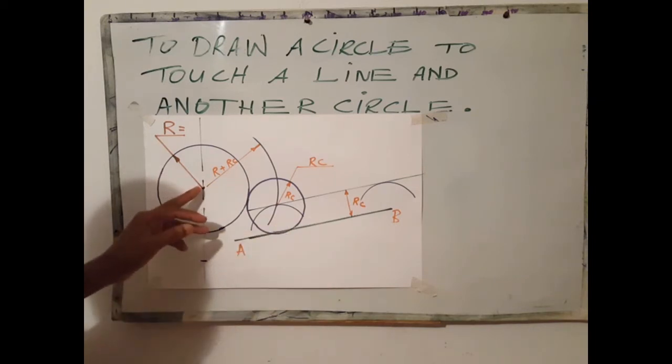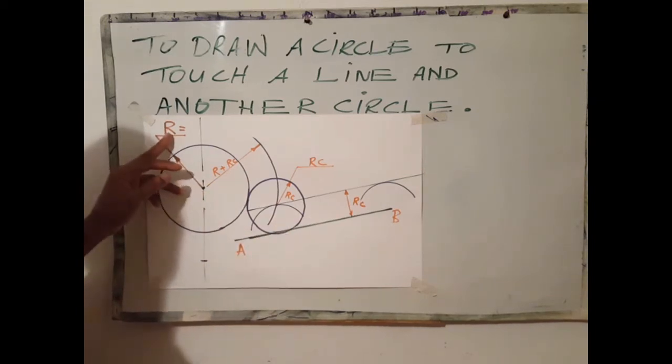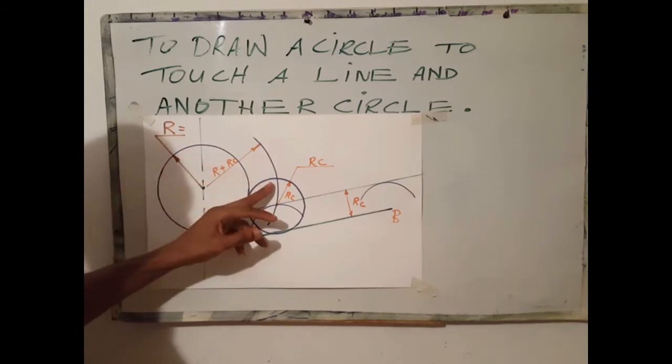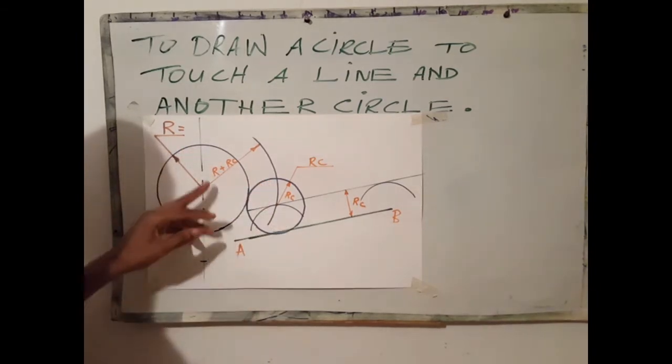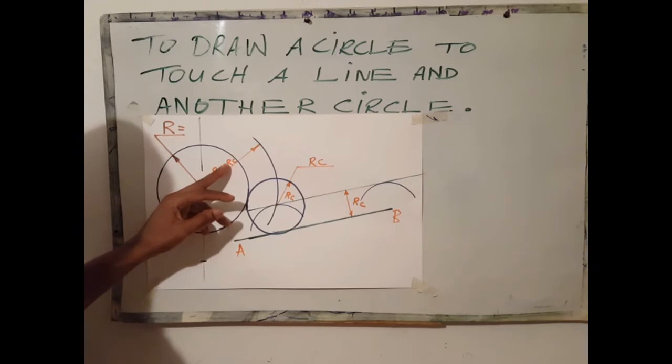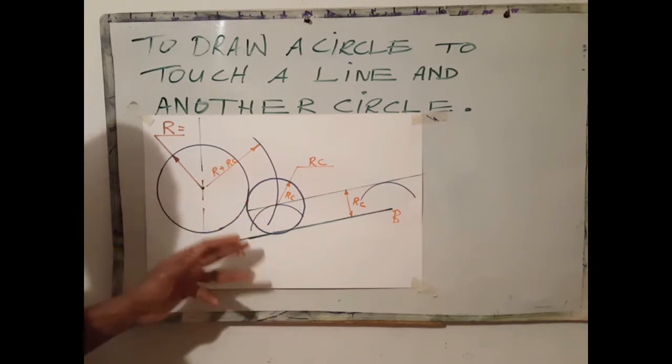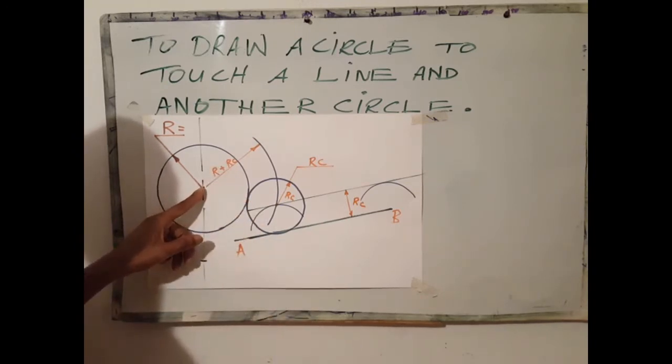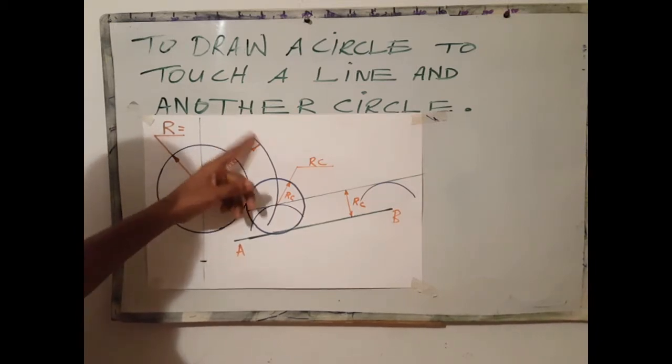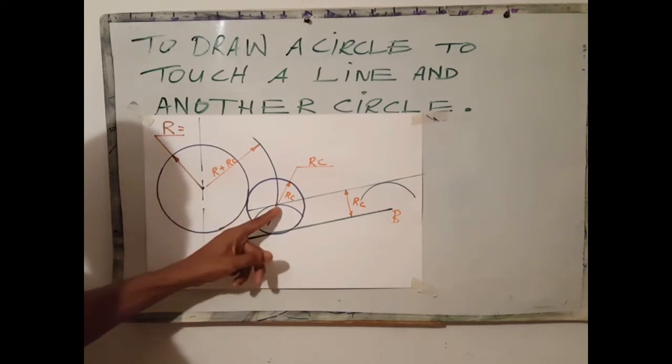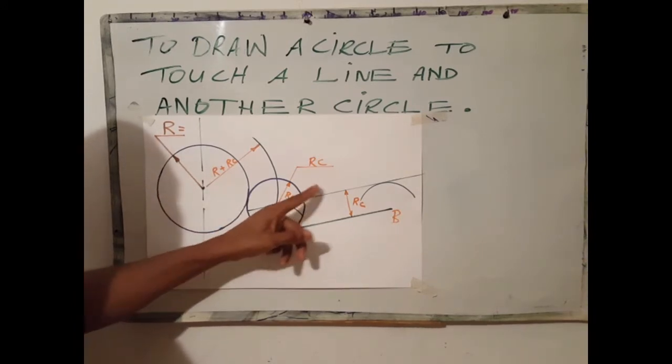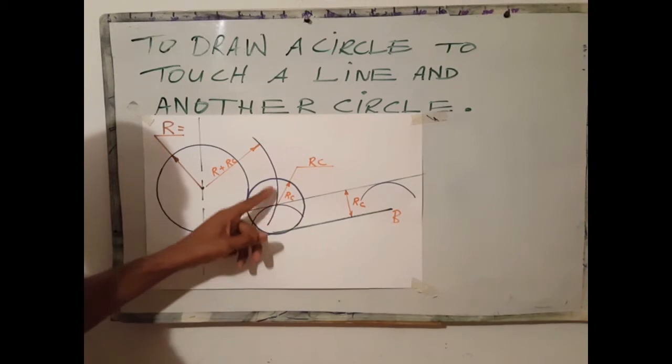Next step is to add the radius of the circle to the radius of the blending circle. In this case we have R plus Rc. We use the center of the big radius as center point to draw an arc. At the point where the arc cuts the parallel line, that's our center for this circle.